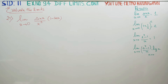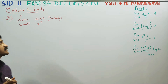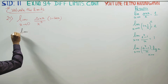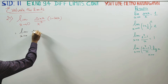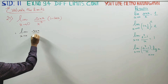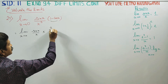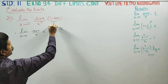Dear Learn Standard students, in exercise number 9.4, sum number 27: limit as x turns to 0 of sin x divided by x cube times 1 minus cos x. Limit x turns to 0. This can be written as sin x by x, and 1 minus cos x can be written as 2 sin squared x by 2. This is the trigonometry formula.